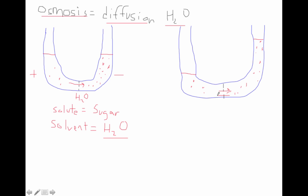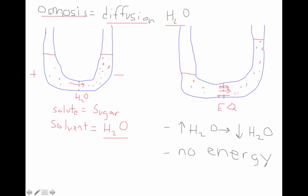Just like passive diffusion, water is still moving back and forth in each direction — it's just reached a state of equilibrium. To summarize: osmosis goes from a high concentration of water to a low concentration of water until equilibrium is reached, and it does not require energy. As a reference, you can go to figure 7.11, where you'll see a very similar picture to what we just drew.